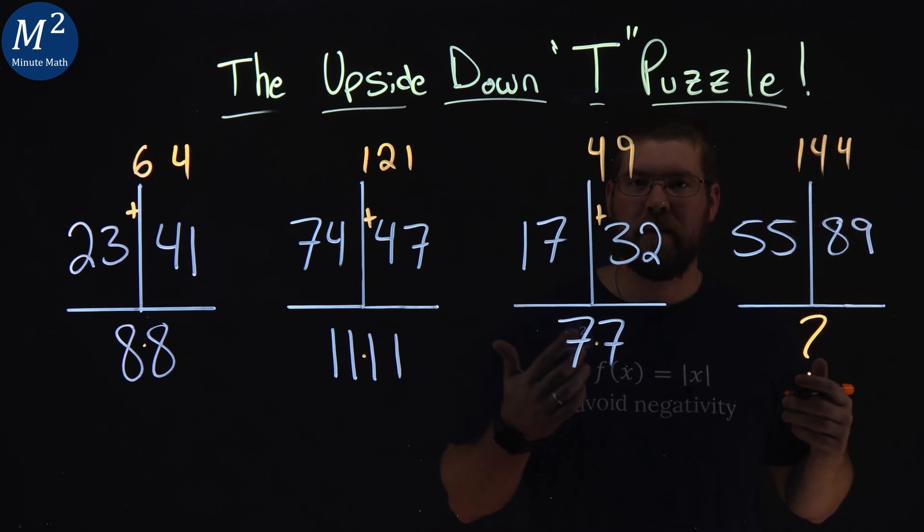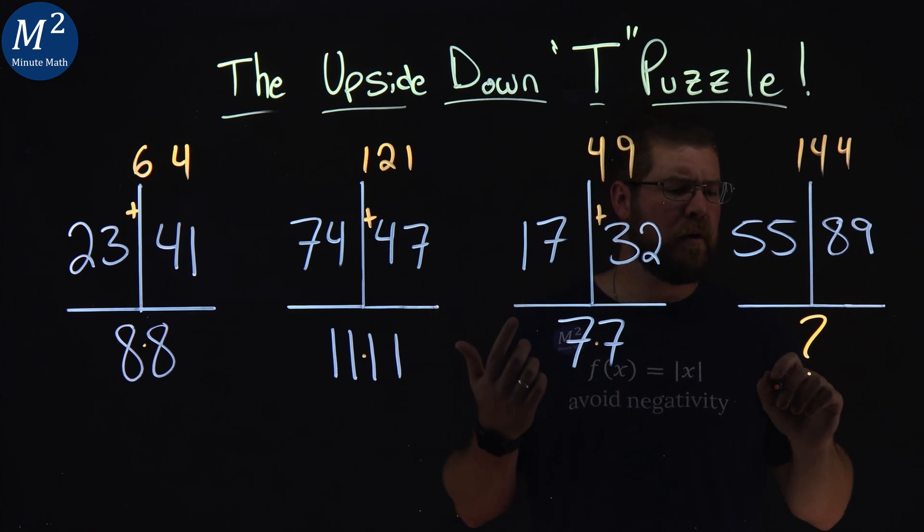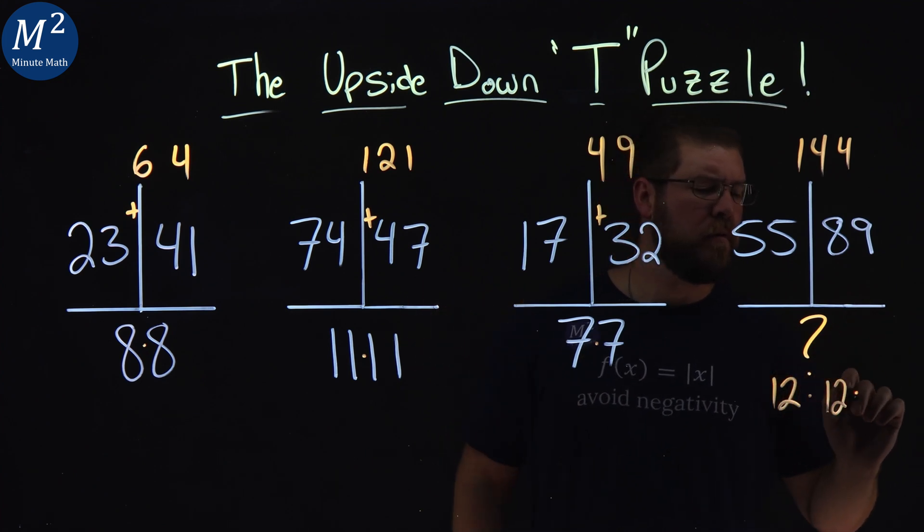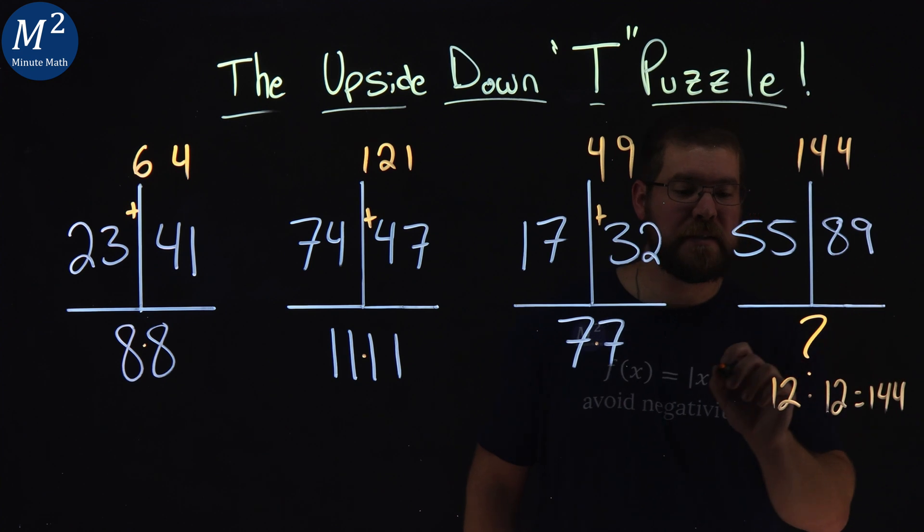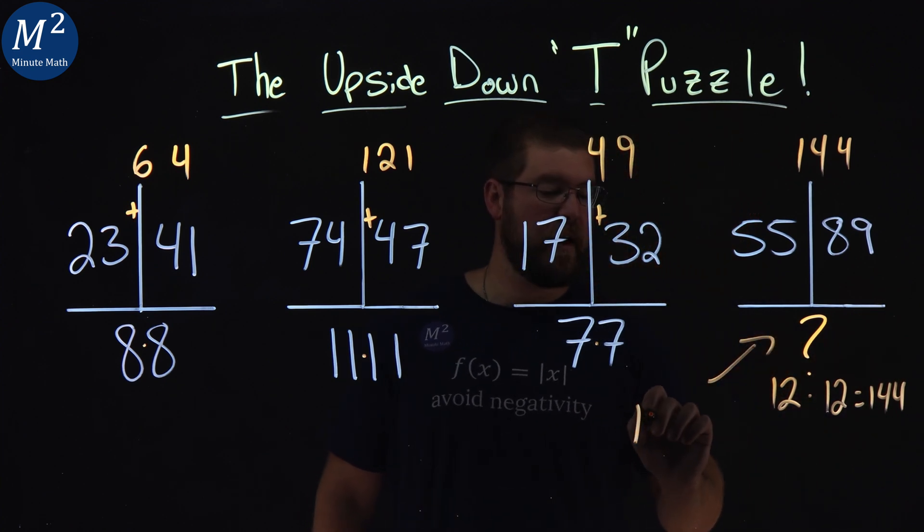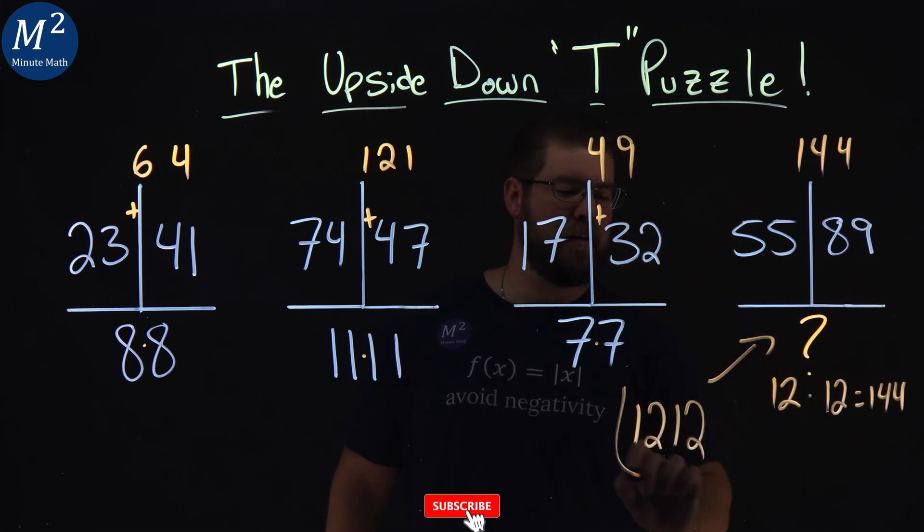5 and 8 give you 13 plus the 1 is 144. We have 144 here, which we know is 12 times 12 is 144. So our missing number here is just 1,212.